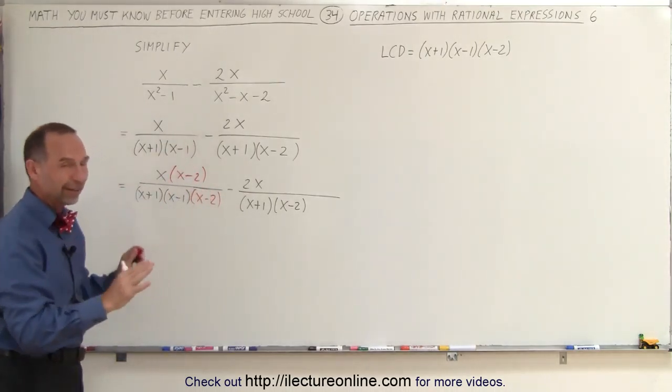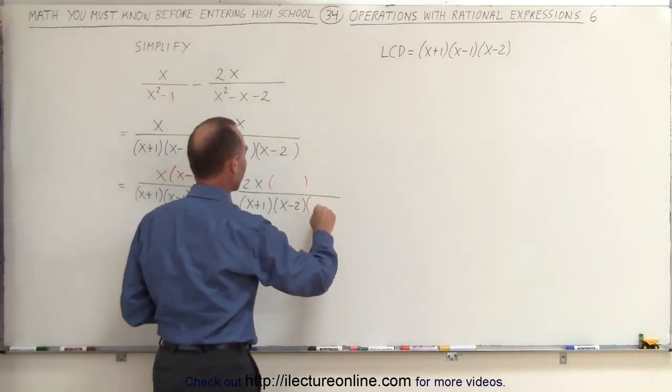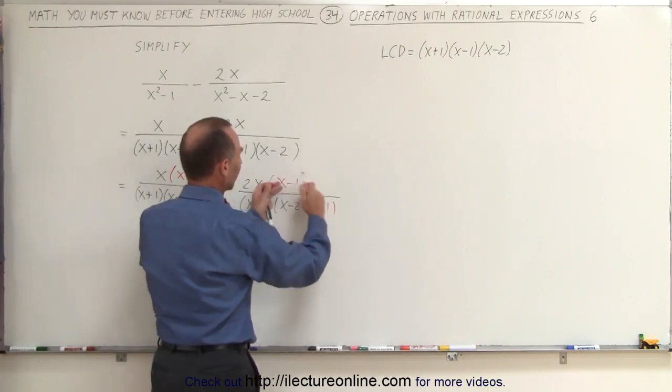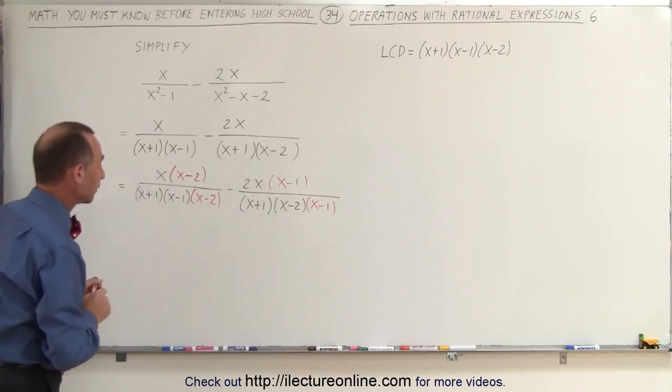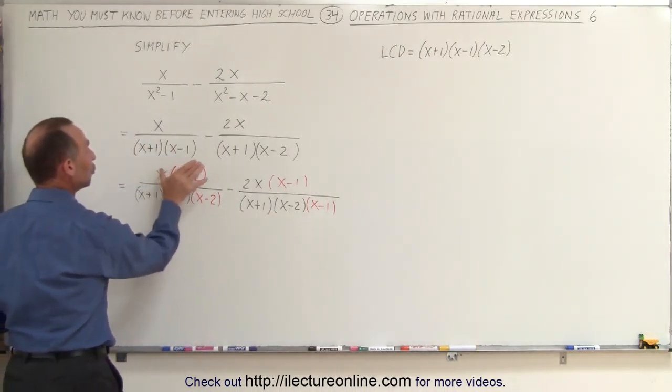So in this case, we're going to multiply both the numerator and denominator by the missing term, which is x minus 2. Again, notice that if we cancel these two out, you end up with what we started with, so nothing really has changed. And over here, we're going to multiply both the numerator and the denominator by x minus 1.